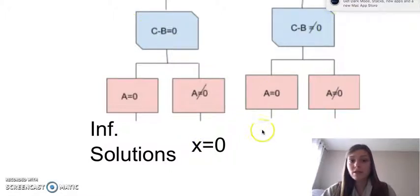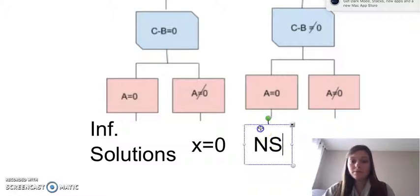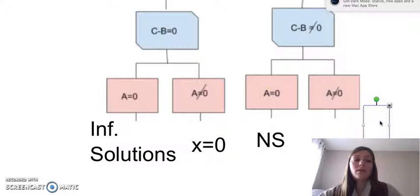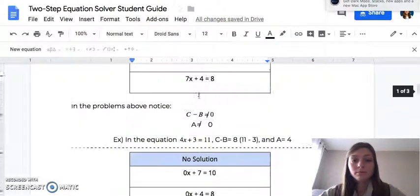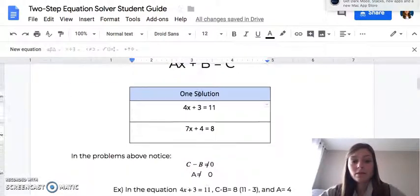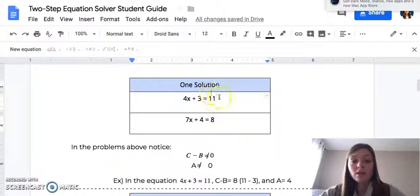Continuing over, when C minus B is not equal to zero, and A is equal to zero, we have no solution. And our last little wing here, we can think about if we've got, to come back to our guide, a situation up here of one solution. We're going to take C, and we're going to subtract B, so in this case we're left with eight. And then we have four X equals eight, so we're going to take eight, and we're going to divide it by our value of four, to get X by itself.